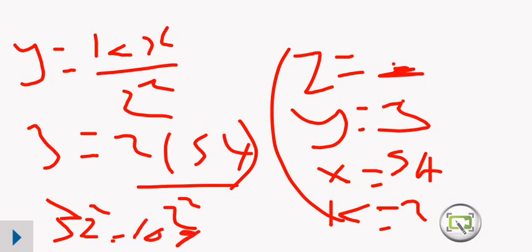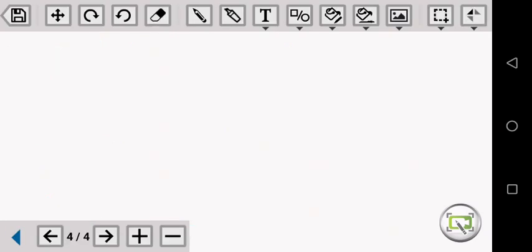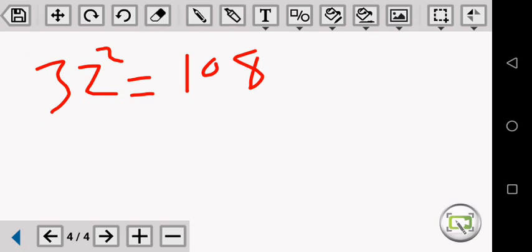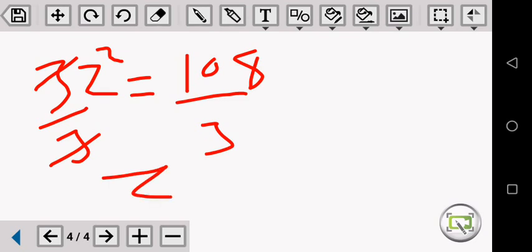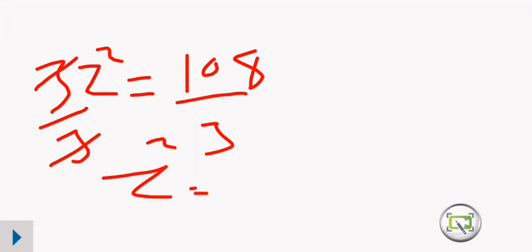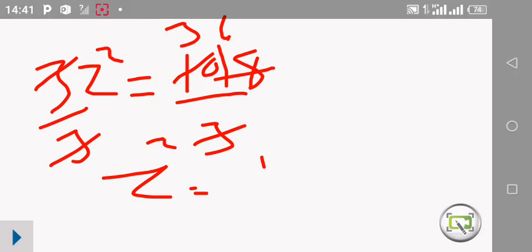So 3Z squared is equal to 108. Now we divide both sides by 3, even this side by 3. This one and that one cancel out. The value of Z squared is equal to 108 divided by 3. 3 into 10 is 3, remainder 1. 3 into 18 is 6. So Z squared is equal to 36.